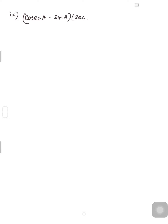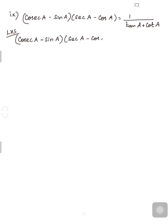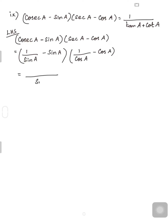Now we move on to the next problem: (cosecA - sinA)(secA - cosA) = 1/(tanA + cotA). Let me take the LHS: (cosecA - sinA)(secA - cosA). cosecA can be written as 1/sinA because it is the reciprocal of sinA. So it is (1/sinA - sinA)(1/cosA - cosA). Now take the LCM for the first term; the LCM is sinA, giving (1 - sin²A)/sinA.